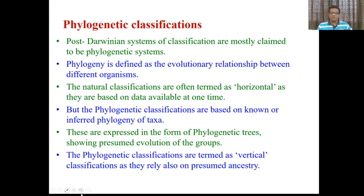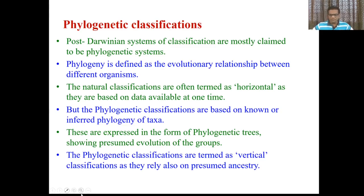The sexual system of Linnaeus is an example of artificial classification. Bentham and Hooker's system is an example of natural classification. Phylogenetic classifications are given by modern botanists like Takhtajan, Cronquist, and were started by Engler and Prantl. Engler and Prantl's system is considered a transitional phylogeny as it does not reflect clear-cut phylogeny, but even then it is the beginning of phylogenetic classification. Thank you very much.